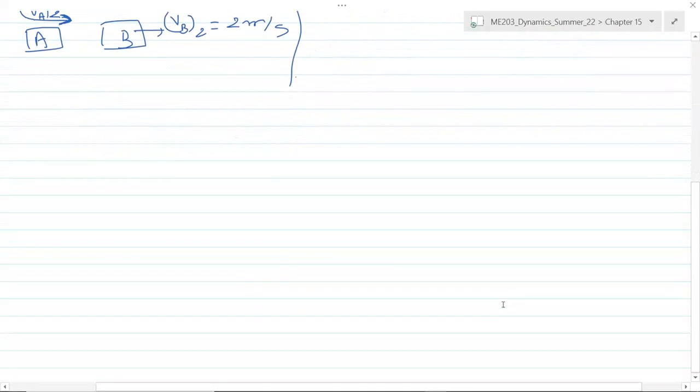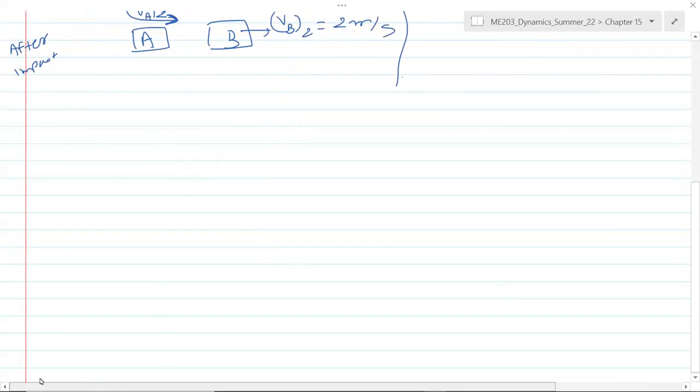This is part one of the question. Now for the second question we need to calculate the average impulsive force between them. We can calculate that simply by applying linear impulse and momentum equation to one of the cars. Let's apply that equation to car A.